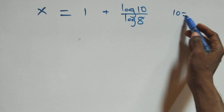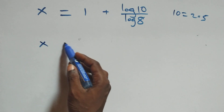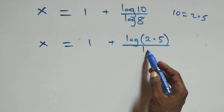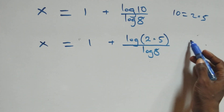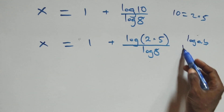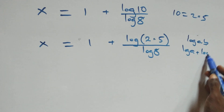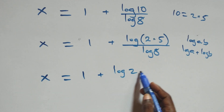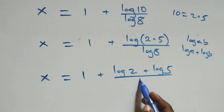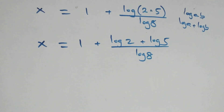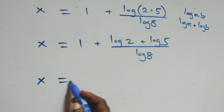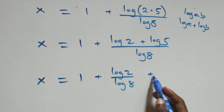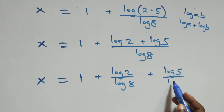We can also rewrite 10 as 2 times 5. So here we have x equals to 1 plus log(2 × 5) over log 8. Applying the product rule again — log(a × b) equals log a plus log b — we get x equals to 1 plus log 2 plus log 5, all over log 8. We then separate this into two fractions: x equals to 1 plus log 2 over log 8 plus log 5 over log 8.